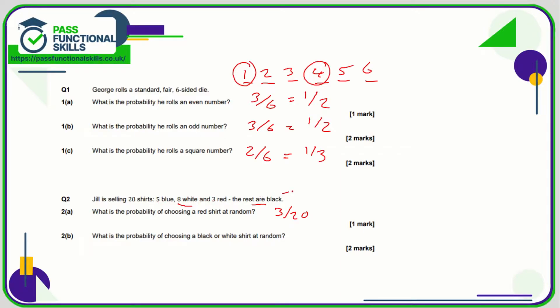So four must be black. So black or white is going to be eight plus four, which is 12 out of 20, otherwise known as six out of 10, otherwise known as three out of five. But I believe the answer 12/20 is accepted.